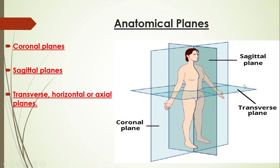The transverse plane, also called the horizontal or axial plane, divides the body into superior — above — and inferior — below — parts. So, to summarize: the coronal plane divides the body into anterior and posterior parts; the sagittal plane divides it into right and left parts; and the transverse or horizontal or axial plane divides it into superior and inferior parts.